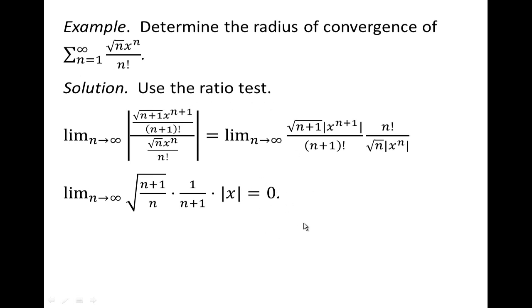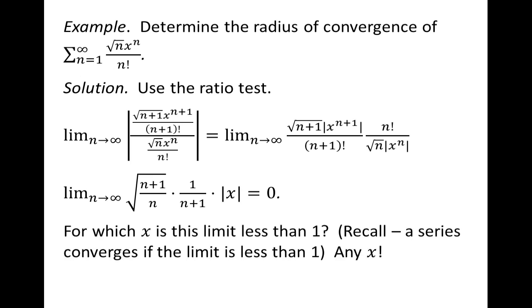Now let's go back to the ratio test. The ratio test said if our limit is less than 1, then the series converges. So for which values of x is this limit less than 1? Well, x got washed out by the limit. And so any x value will have this series converging.